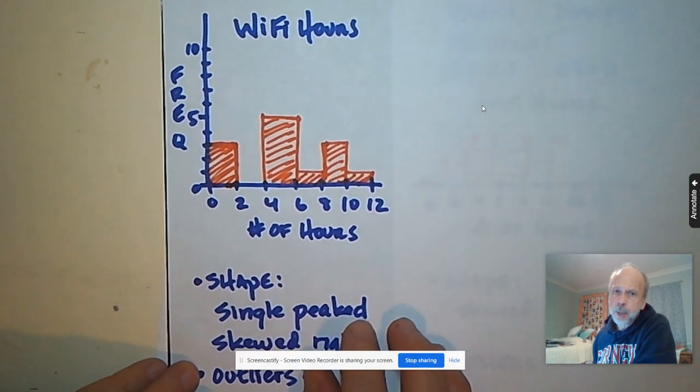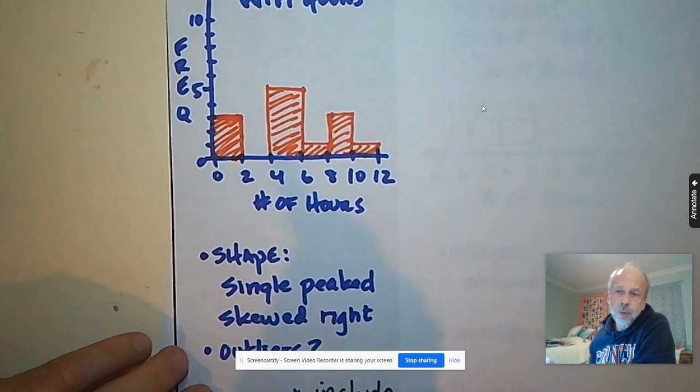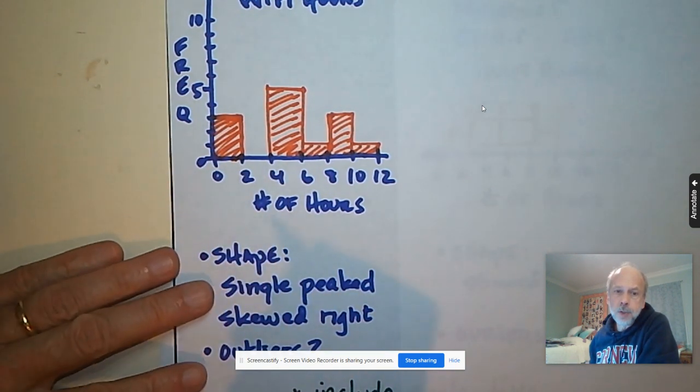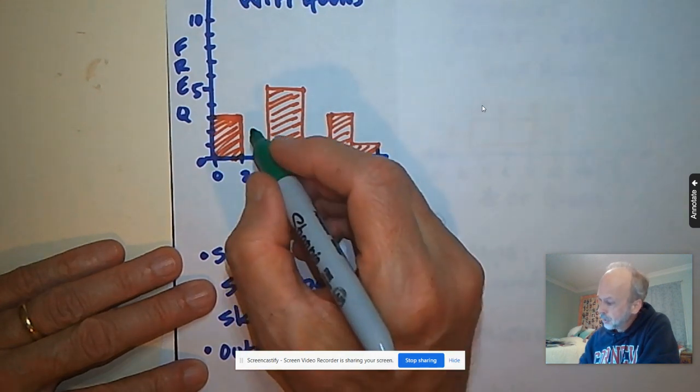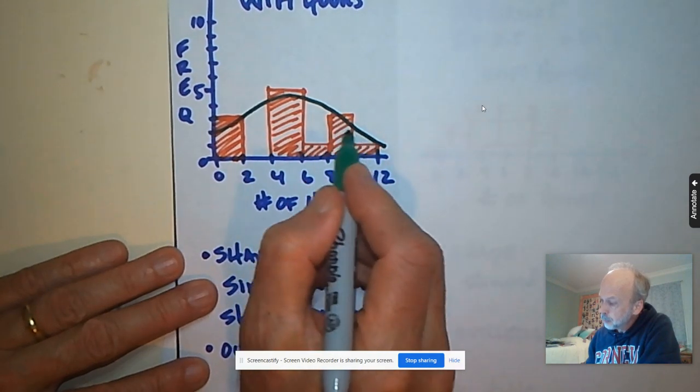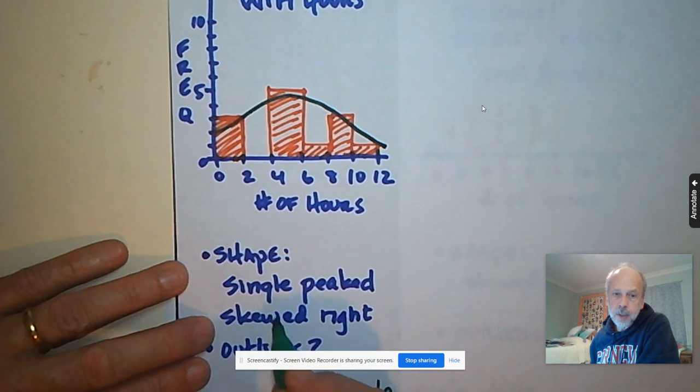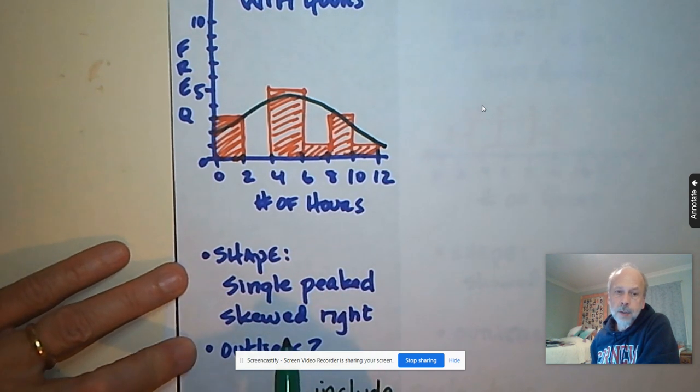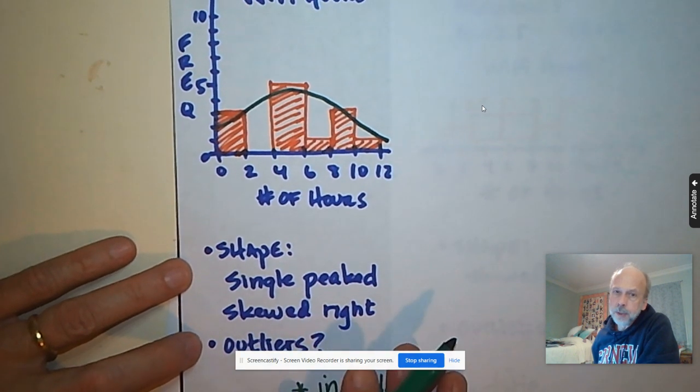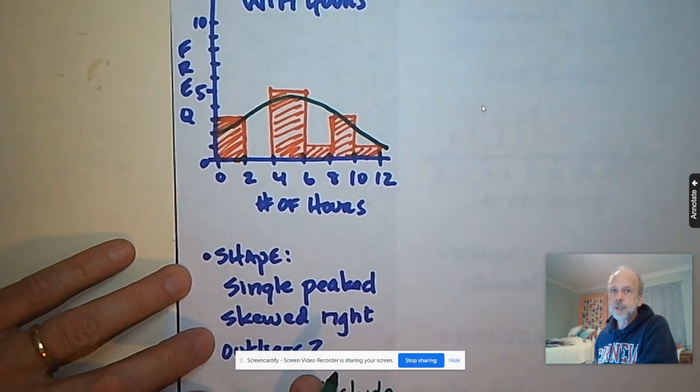Once we have our graph made, we can describe the shape of it. We can use words like single peaked, double peaked, uniform meaning flat, skewed right, skewed left. Here when I look at this, to me it looks kind of like a mountain, but it's pulled a little bit to the right. So I'm describing it as single peaked, skewed right. I do need to say whether there are outliers. Here, I don't really think my data had outliers, because all of the values are pretty close together.